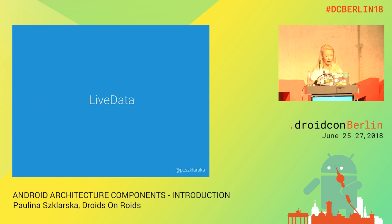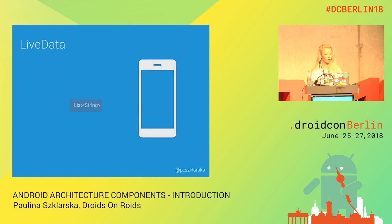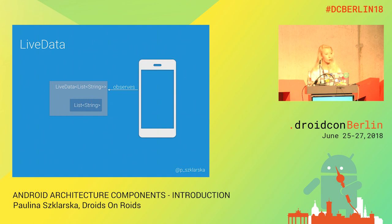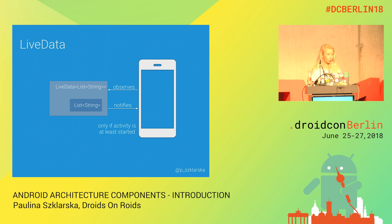LiveData is basically lifecycle-aware data. Let's take an example of a list of strings — we can just wrap this list into LiveData. Thanks to this, our activity can observe changes emitted in this list and be notified every time there is a change. This is lifecycle-aware, so all of this happens only if the activity is at least started. If the activity is stopped, we will not be notified about new data.